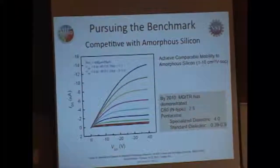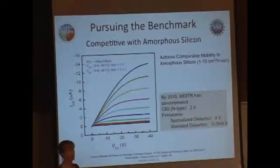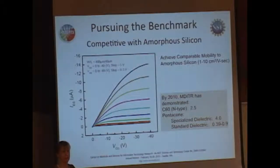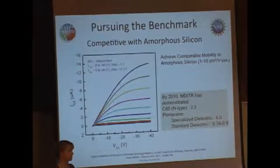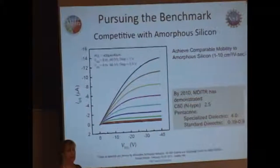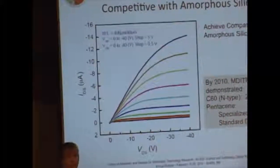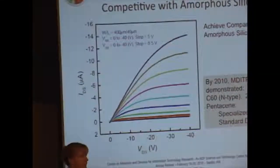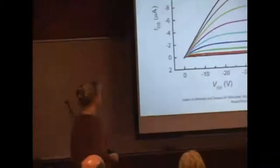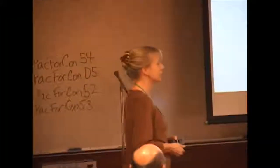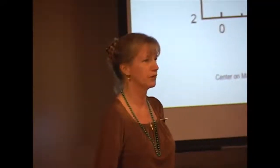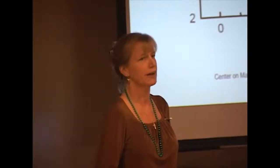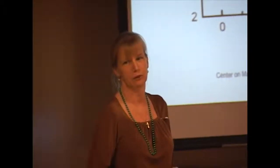We have typically defined that comparison via mobility, but we also look at air stability, input voltages, power supply voltages, and other parameters that define the transistor's competitiveness with amorphous silicon, which is its closest neighbor. The graph shown here is simply a ratio between voltage and current and the transistor's behavior — high mobilities imply higher current for the same input voltage.